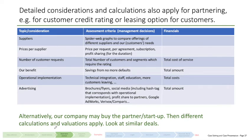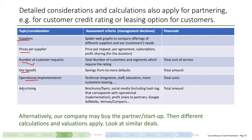These detailed considerations apply to almost everything. If we want to offer some kind of customer credit rating or leasing option, we basically need a finance partner. We have to consider what are the suppliers and prices, what is the number of customer requests we have to process through this partner, and what is our benefit from partnering with a credit rating agency or leasing option. What are the implementation questions for operational implementation? And last but not least, there must be some kind of advertising to let our customer know that we have these additional offerings.